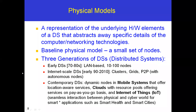Let's see the different generations of distributed systems. In the early 70s and 80s, distributed systems were LAN-based systems with a maximum of 10 to 100 nodes. After the early 90s to 2010, distributed systems included clusters — a group of similar nodes — as well as grids and P2P systems.